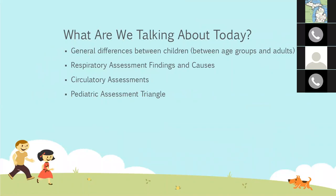So what are we going to talk about today? We're going to talk about some differences between children — differences in age groups and also differences between children and adults. We'll talk about some specific respiratory assessment things, findings and causes of issues. We're going to talk about circulatory assessments, which I think is probably the most different part about kids, and we'll touch on the pediatric assessment triangle. At the very end, I have a few videos where we can actually see some sick kids.